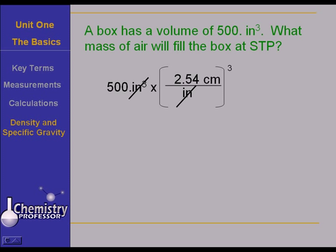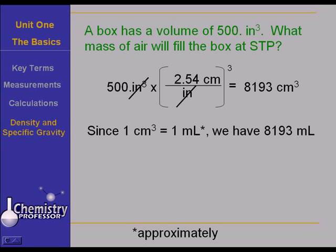And I am left with a product of 500 times 2.54 cubed centimeters cubed. And that gives me 8,193 cubic centimeters. Now don't forget to cube the 2.54. Since a cubic centimeter is approximately a milliliter, this means we have 8,193 milliliters. Life is looking a lot better. 8,193 milliliters times a liter per thousand milliliters means that I have 8.193 liters.